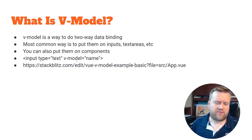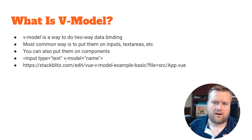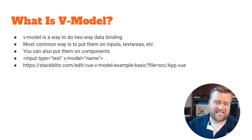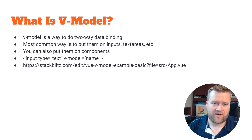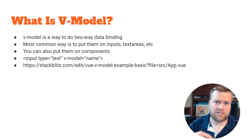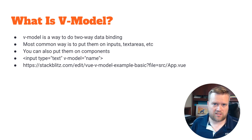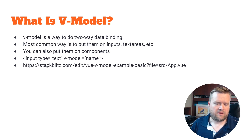One of the things people get confused about is that V model is really just syntactic sugar. It's basically doing a bind, it's also watching for different events, and then making changes when those two things happen.